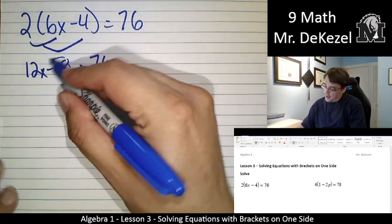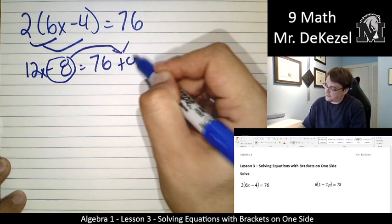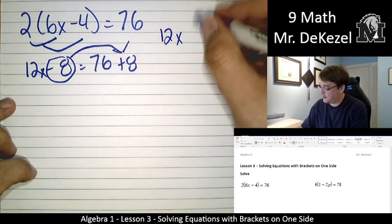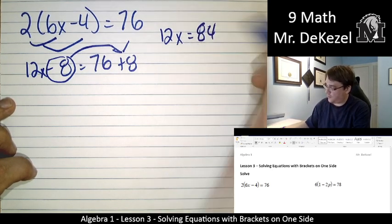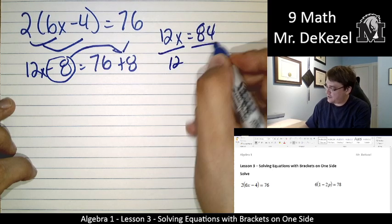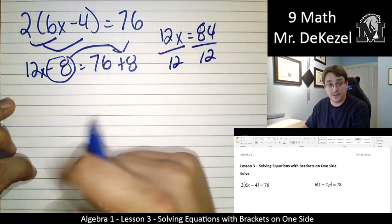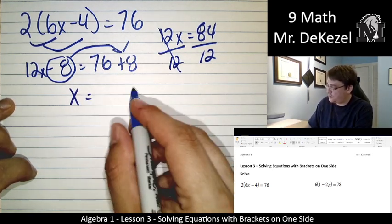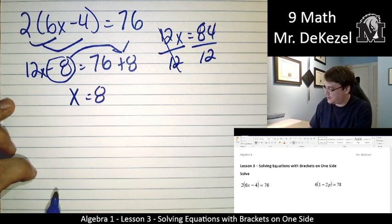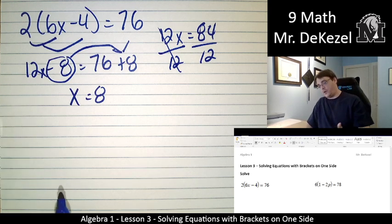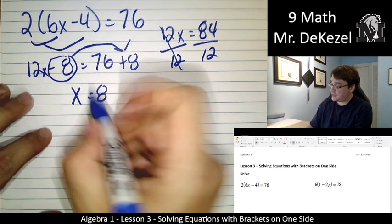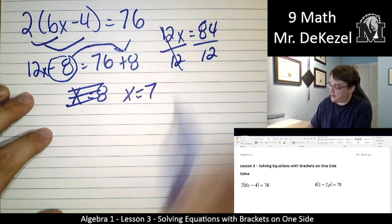We're going to move the minus 8 across the equal sign. It becomes positive on the other side. So we have 12x is equal to 76 plus 8 is 84. We divide both sides by 12, or we move the 12 to the other side. It goes on the bottom. x is equal to 7.